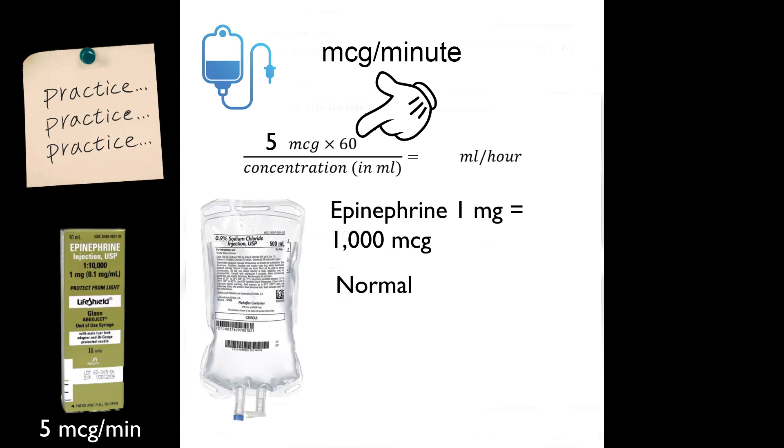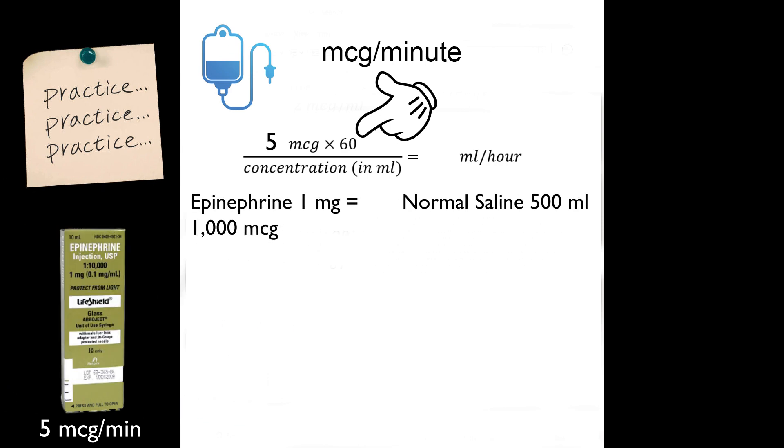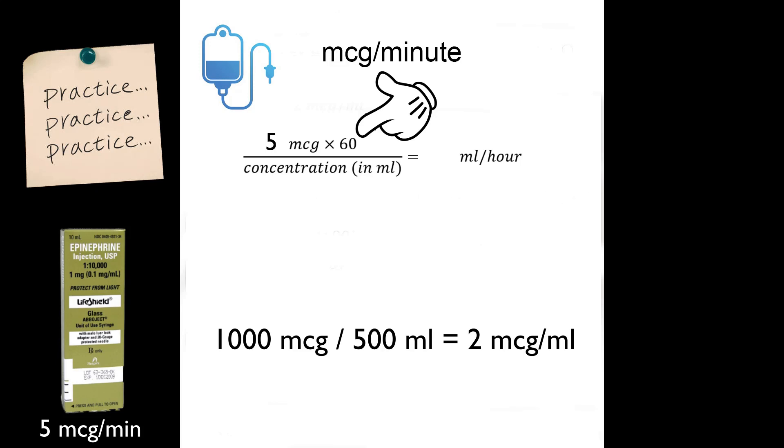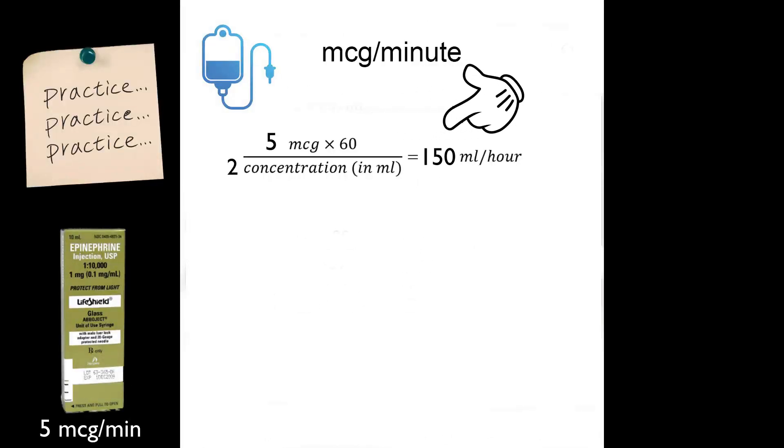That's 1000 divided by 500, and our concentration is 2 micrograms per milliliter. And now all you have to do is the math: 5 times 60 divided by 2 will get you 150 milliliters per hour.